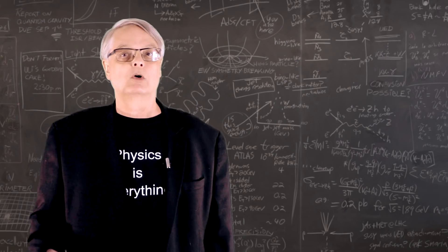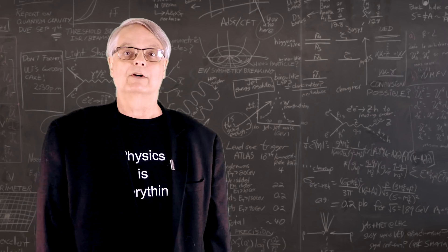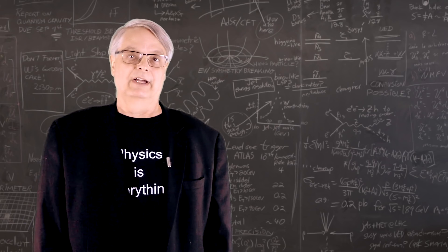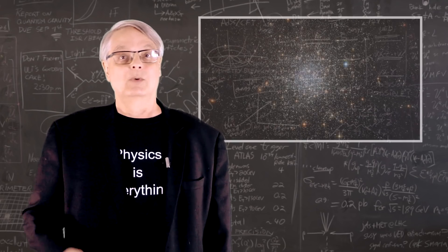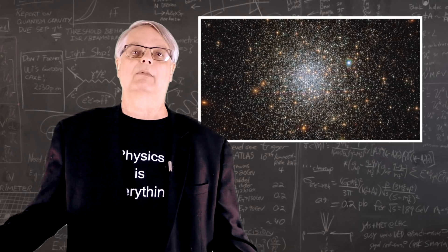If dark matter is so much more prevalent than ordinary matter, surely it must be easy to find, right? After all, we can see stars and galaxies, so what's the problem?